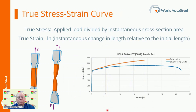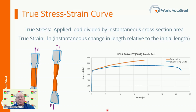During the tensile test, the width and thickness shrink as the length of the test sample increases. Although these dimensional changes are not considered when determining the engineering stress, they are of primary importance when determining the true stress. At any load, the true stress is the load divided by the cross-sectional area at that instant. The true stress-true strain curve gives an accurate view of the stress-strain relationship, one where the stress is not dropping as load application continues.